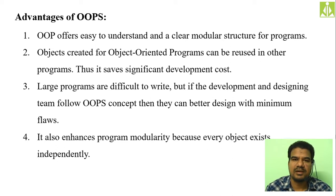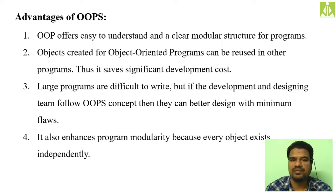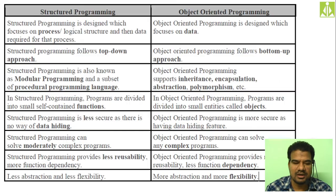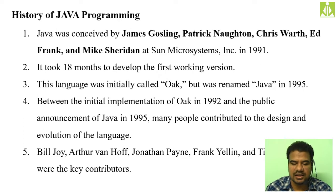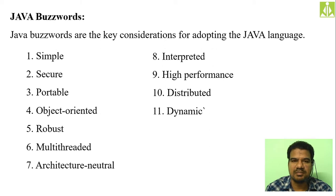Whenever we discuss advantages, we need to compare object oriented programming with another type of programming — that is structured programming. So basically to discuss the advantages of OOP we compared it with structured programming. Then we discussed the history of Java — how it evolved from structured programming concepts to object oriented programming, how Java has evolved over the years.